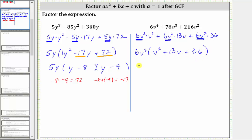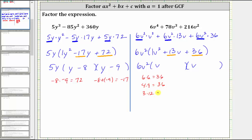If it does factor, it will factor into two binomial factors. Because the first term inside the parentheses is v², which equals v · v, we have a factor of v in the first position of each binomial. And because the leading coefficient is one, we need to find the factors of positive 36 that add to positive 13. The factors of 36 are: 6 × 6, 4 × 9, 3 × 12, 2 × 18, and 1 × 36.